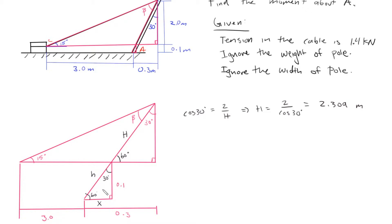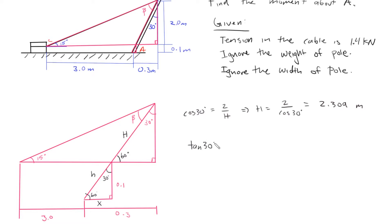Now we're going to define this x value. We know the adjacent side and need the opposite, so tangent of 30 degrees equals opposite over adjacent, which is x divided by 0.1. Therefore x equals 0.1 times the tangent of 30 degrees, which gives x equals 0.0577 meters.